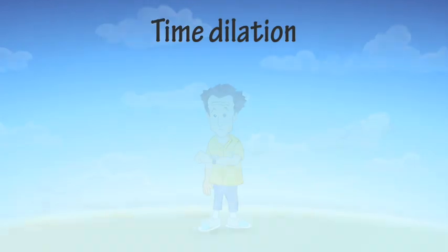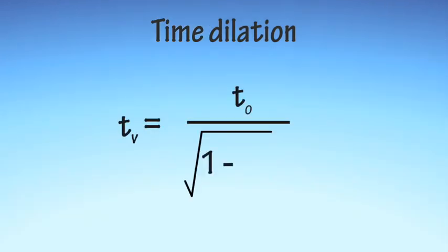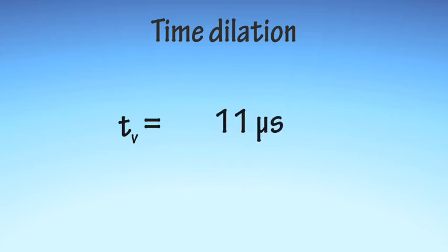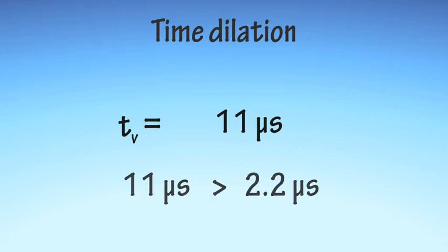Using the equation for time dilation, you can calculate TV, the mean lifetime of a moving muon. It turns out to be about 11 microseconds, which is five times longer than the lifetime in the rest frame.